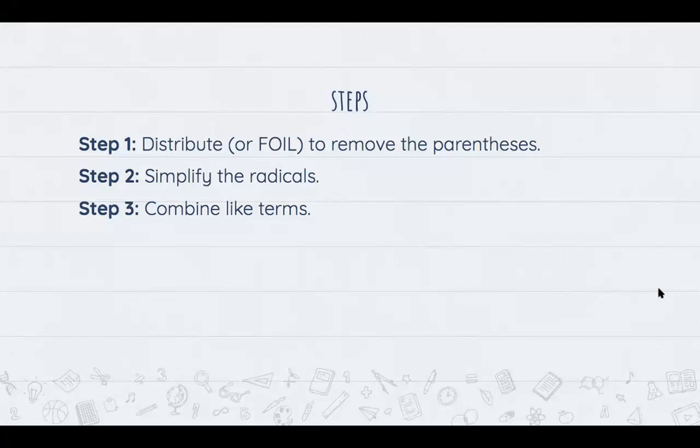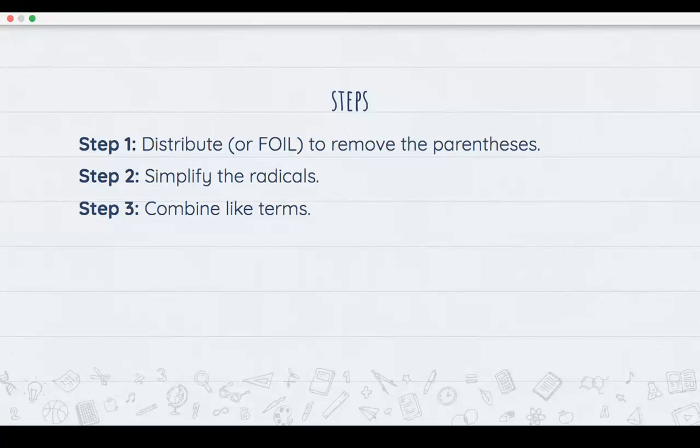First we have to distribute or use the FOIL method to remove parentheses if there are parentheses, and then we simplify the radicals by using the cutoff method to find perfect squares, and then combine like terms to get your final result.